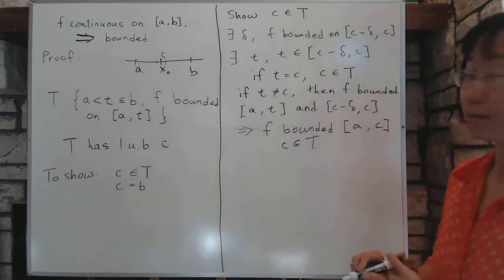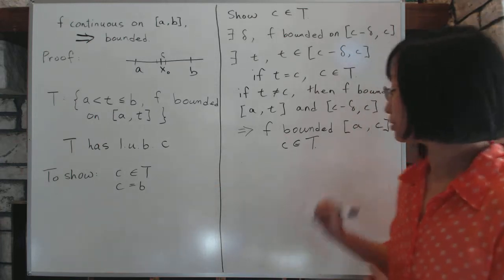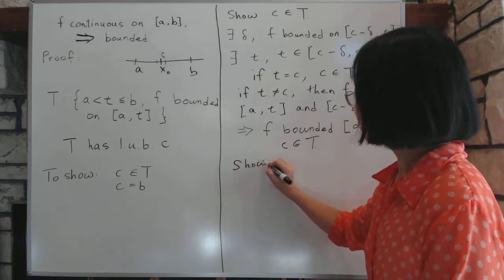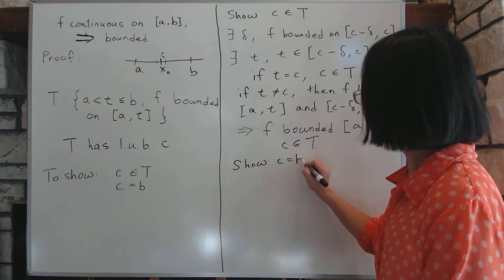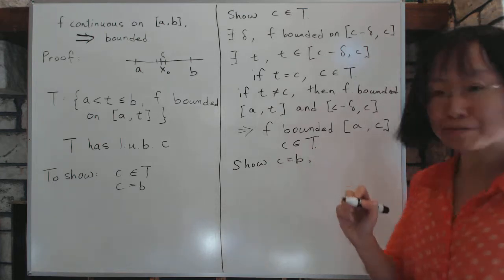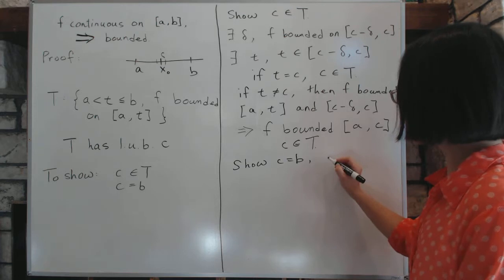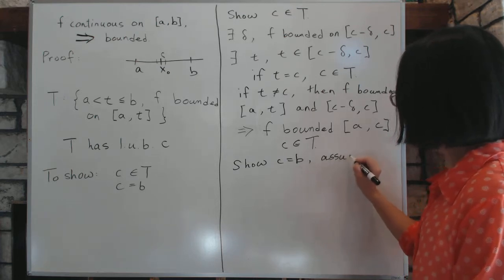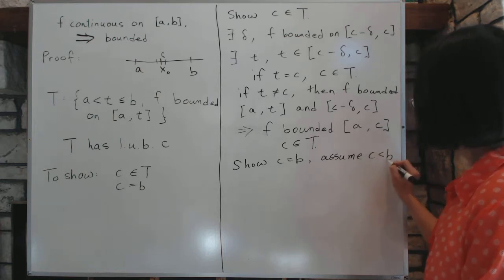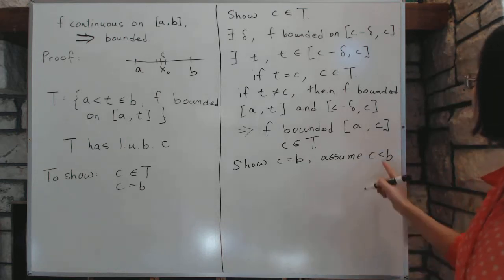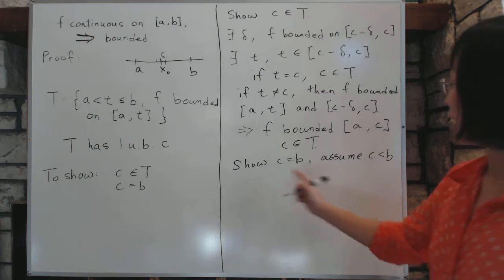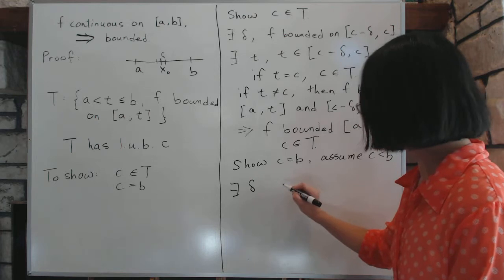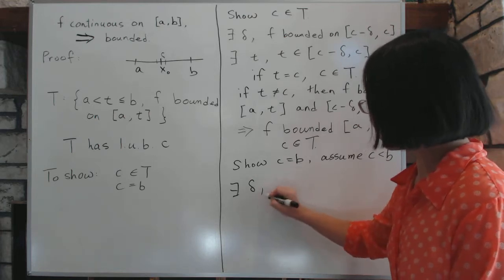The second part we're proving is very similar. Again, we will use principles one and two to show that C equals to B, but this time we will prove by contradiction. Assume C is less than B. Now, if C is less than B, then we have a certain delta, again, by principle number one, there is a delta such that where F is bounded.